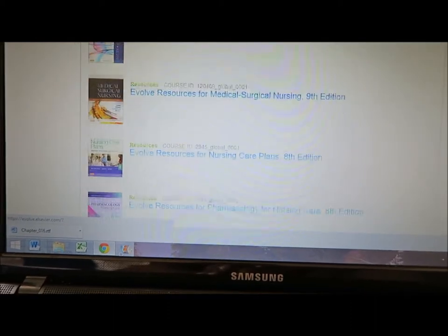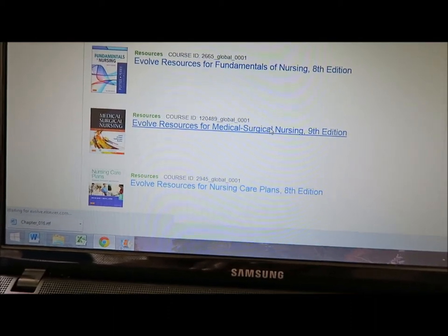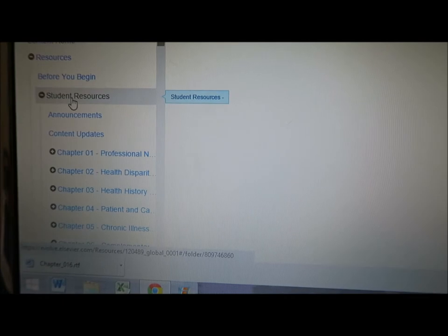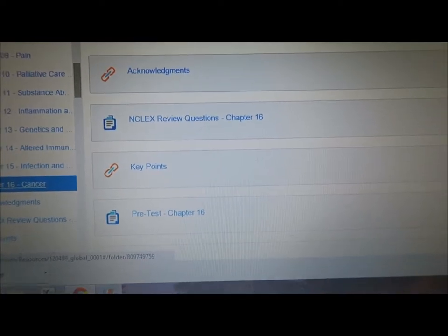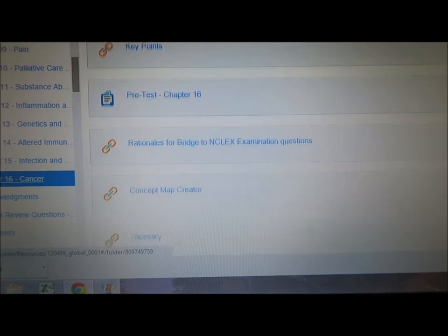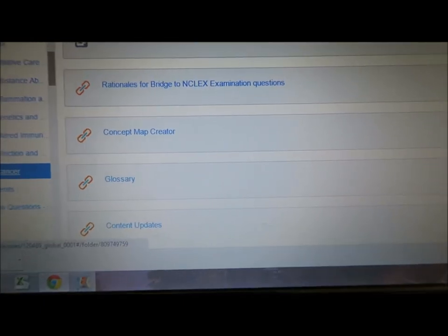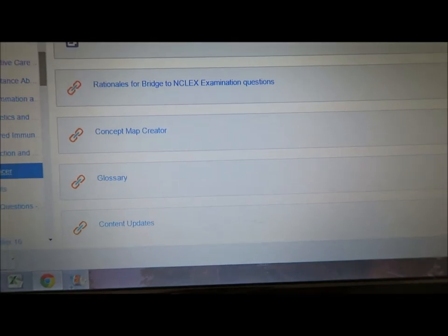I go into the book section, then I go to resources, student resources, then I go to the chapter that I need. I'm doing chapter 16, and then it pops up. It has questions, key points, pre-test, rationales for the questions, concept map, and glossary. I get the key points.